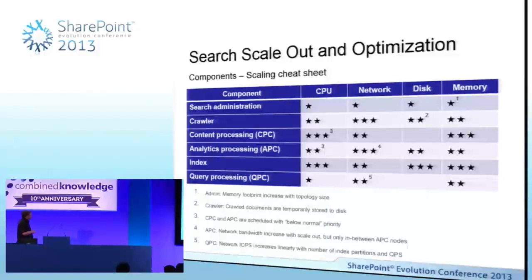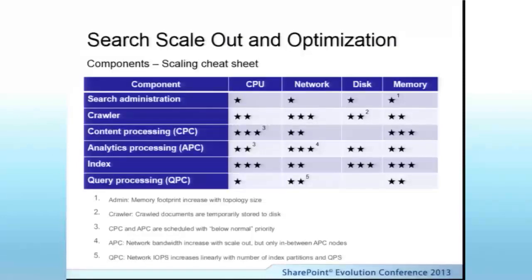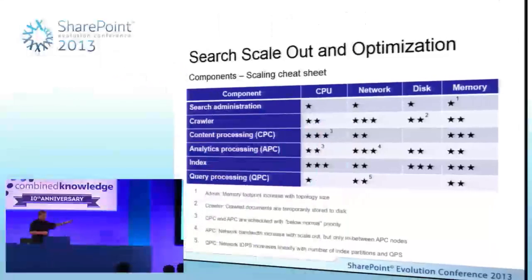These slides are a crib sheet for where you can host components. If there's one takeaway for where you can put things, this is the one slide you want to remember. If a component has three stars for CPU, you don't want to put it alongside another component that also has three stars for CPU because they're going to have contention. The search admin component is one star across the board — you can host it anywhere. You wouldn't host a crawler with an analytics processing component because they're both very heavy on network. You wouldn't host content processing with an index because they're both heavy on CPU.